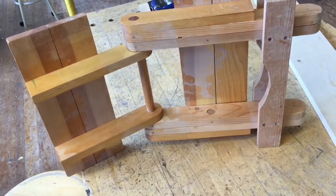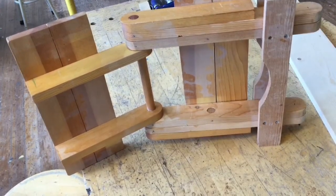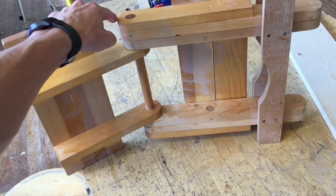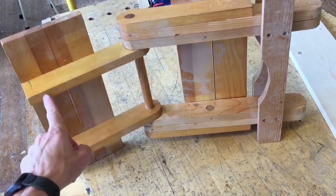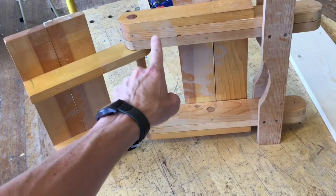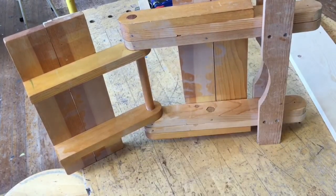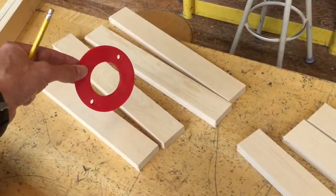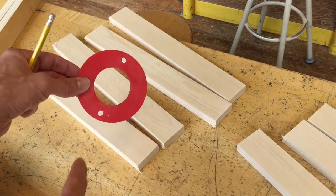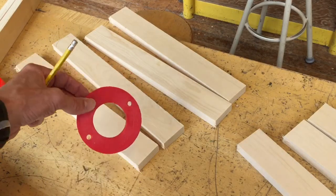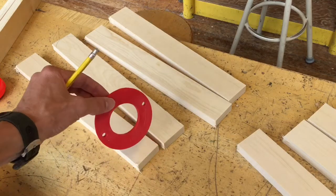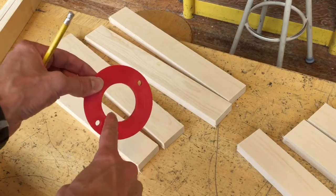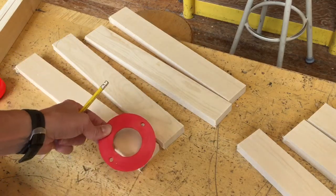Next we need to round the ends. We're going to round one end of the short pieces and both ends of the long pieces. What we want to do is find something that is a circle that's about the same diameter as the width of the piece of wood, and then trace a half circle on the end of each piece like this.